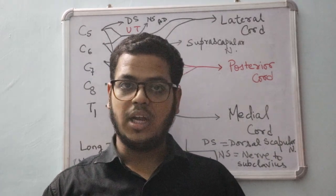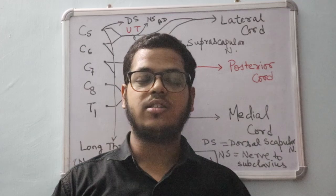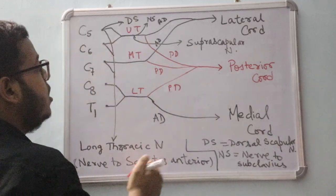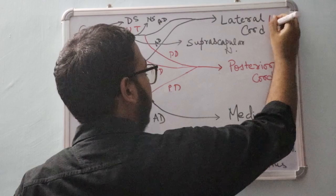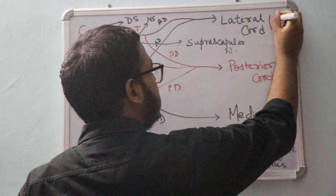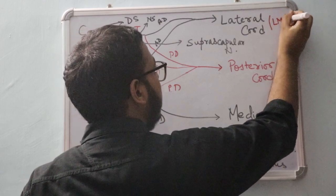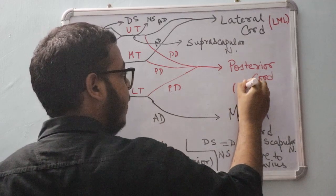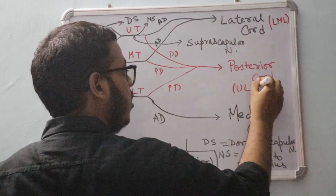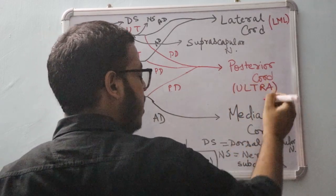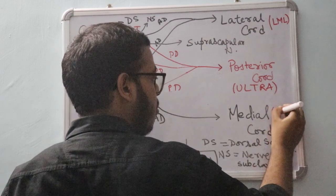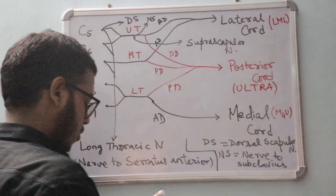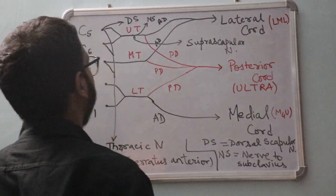Now we will study the branches of the three cords. The lateral cord has a mnemonic: LML. The posterior cord has a mnemonic: ULTRA. The medial cord has a mnemonic: M4U. Let us study the branches individually.